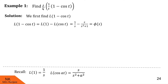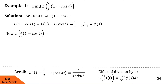Now we proceed to find Laplace of (1/t)(1 - cos t). For that, we recall the effect of division by t: Laplace of (1/t) f(t) is the integral of φ(s) ds over the limit s to infinity, where φ(s) is Laplace of f(t). We have already found φ(s). All we have to do is substitute this φ(s) into the integral and evaluate it. So Laplace of (1/t)(1 - cos t) is the integral from s to infinity of φ(s) ds, where φ(s) = 1/s - s/(s² + 1).